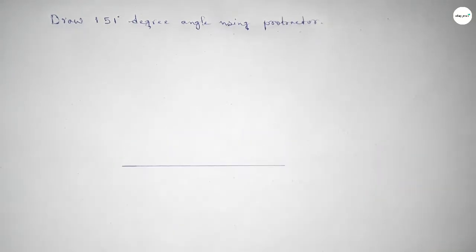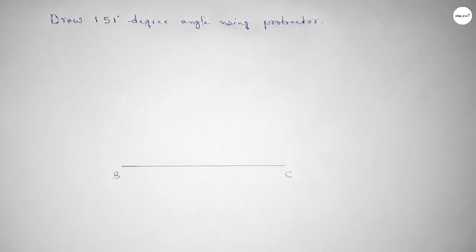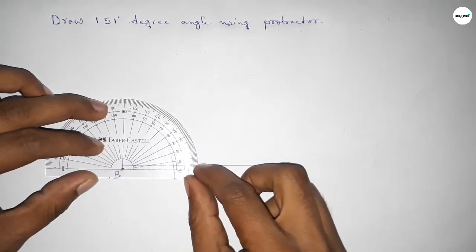First, drawing here a line. Next, taking here point B and here C. Now putting the protractor on the point B perfectly.